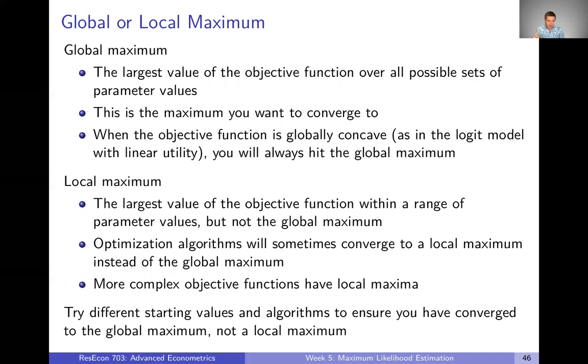There's one more concept I want to introduce, and that's the concept of global maximum or local maximum. A global maximum is the largest value of the objective function over all possible parameter values. And this is the maximum that you want your algorithm to converge to, you want to find the greatest value that you can hit. And what's nice is that when the objective function is globally concave, which is true with a logit model with linear utility, you will always hit the global maximum.